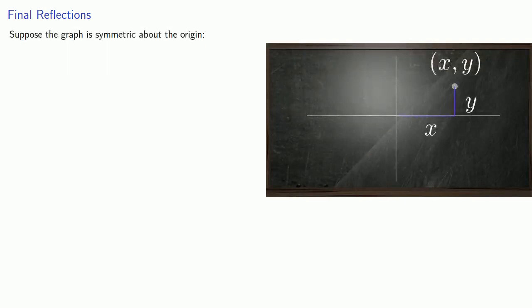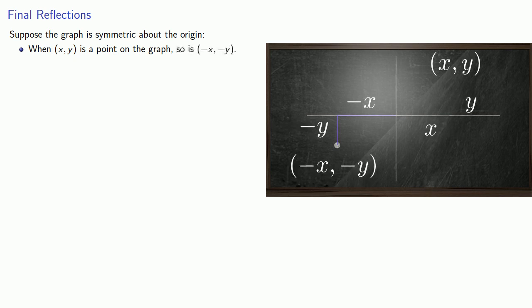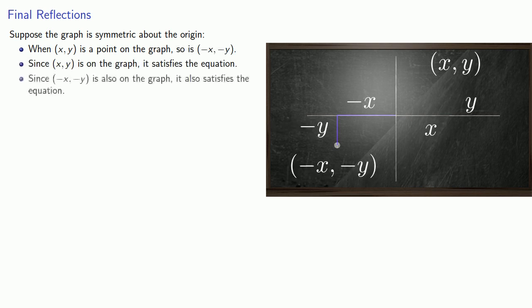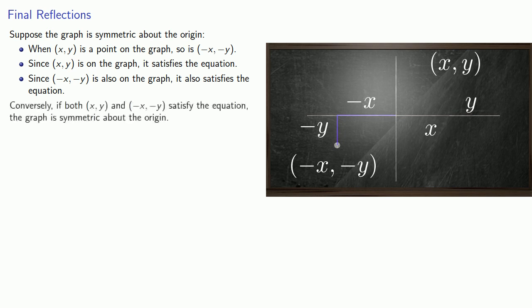Suppose the graph is symmetric about the origin. When (x, y) is a point on the graph, so is (-x, -y). Since (x, y) is on the graph it satisfies the equation. Since (-x, -y) is also on the graph, it also satisfies the equation. And so, if both (x, y) and (-x, -y) satisfy the equation, the graph is symmetric about the origin.